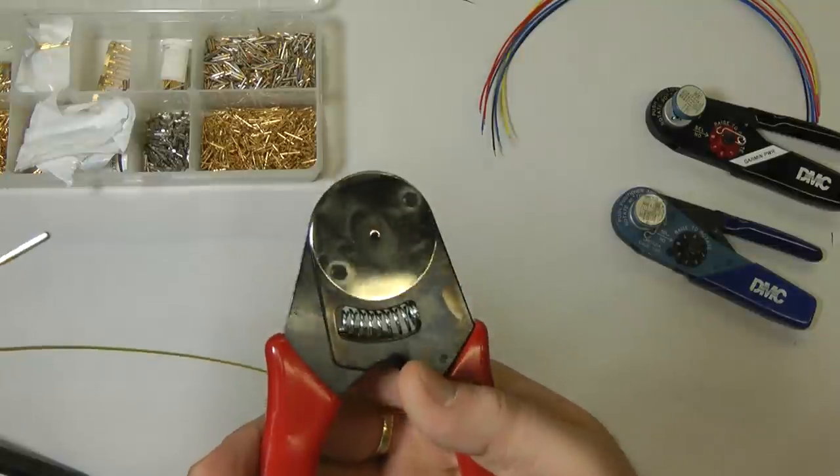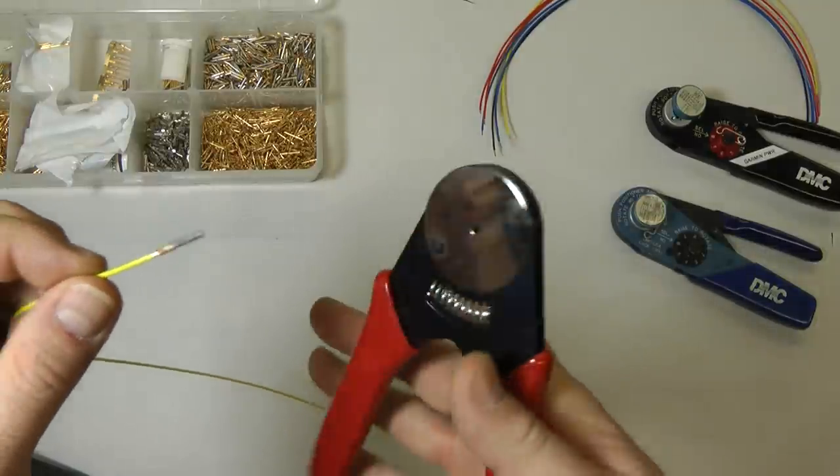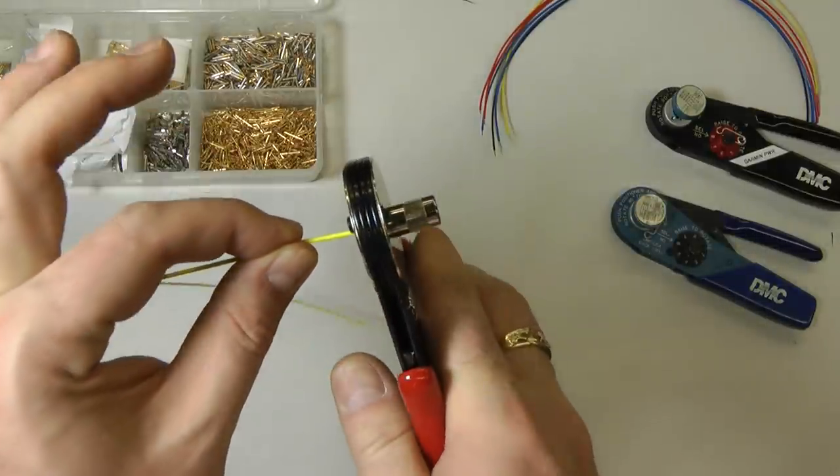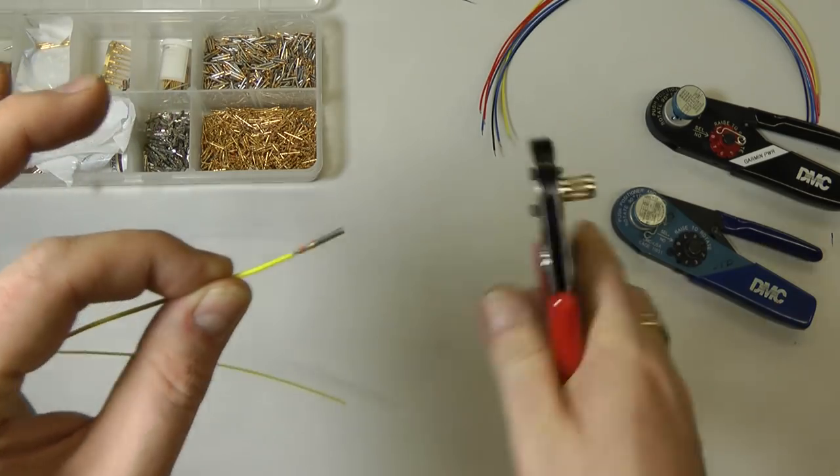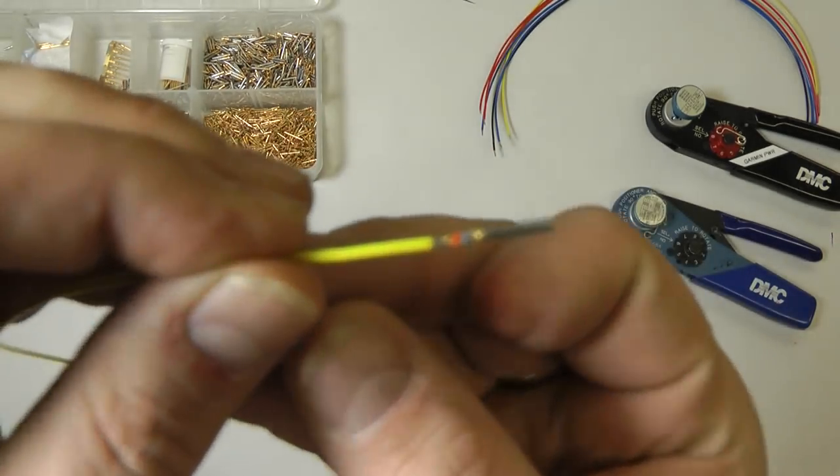And then you'll simply just insert the pin, open up the crimper, whether it's a certified one or an import one, it doesn't matter. Open up the crimper, insert the pin until it hits the bottom, squeeze it and let it go. And you're finished with a completed crimp.